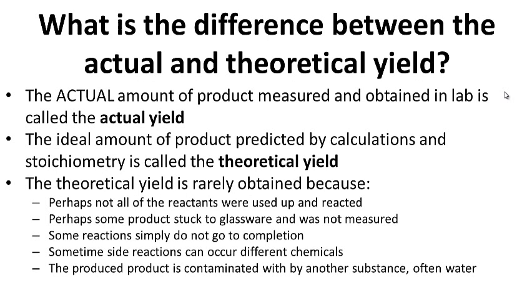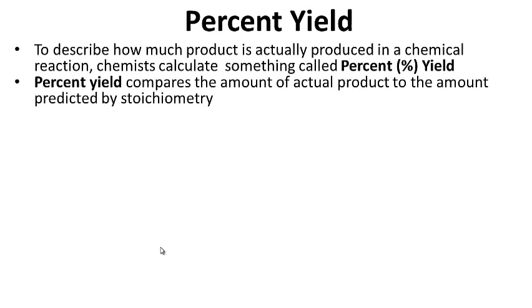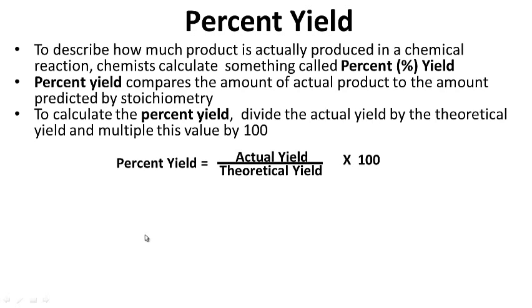For your notes: what is the difference between the actual and theoretical yield? Now, percent yield — to describe how much product is actually produced in a chemical reaction, chemists calculate something called percent yield. To calculate the percent yield, divide the actual yield (what you actually got in lab) by the theoretical yield (from your calculations), and multiply this value by 100.